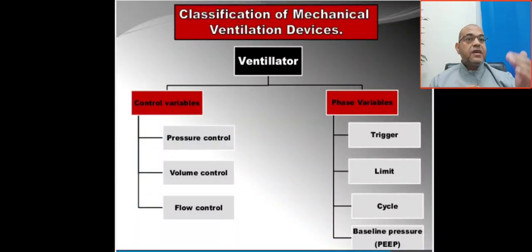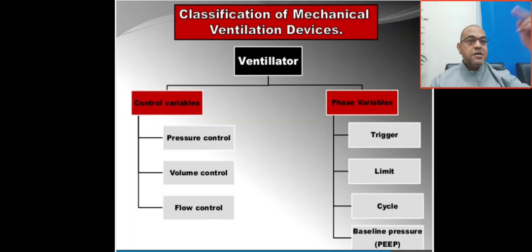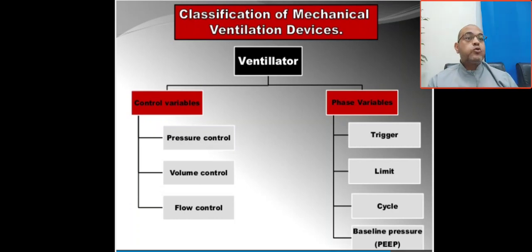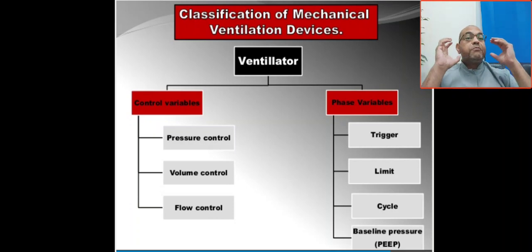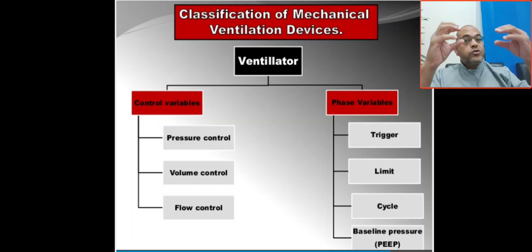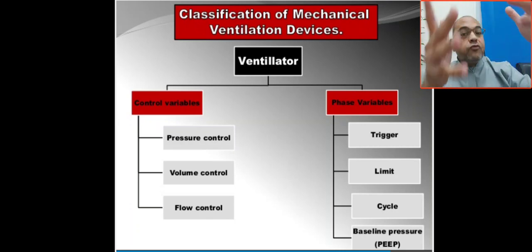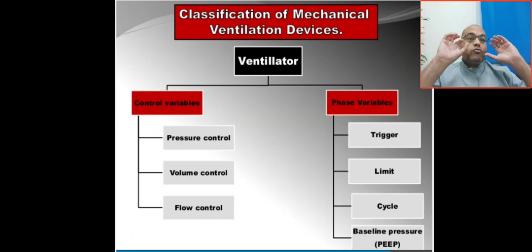Bismillah r-Rahman r-Rahim. Classification of mechanical ventilation devices in two minutes, in a simple way. The ventilator control variable or phase variable — the control variable can be pressure control, volume control, or dual. Pressure control means I control the pressure; I set the pressure, and the volume and flow will be the variable.